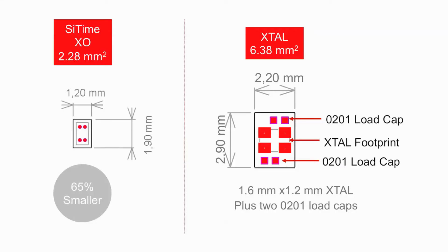Reason number three: MEMS low-frequency oscillator solutions consume 65% less space on the board. SciTime's 1.5 mm × 0.8 mm oscillators are a completely integrated solution and do not require external components such as power supply decoupling caps. The 1508 footprint is smaller than the smallest quartz crystal footprint at 1.6 mm × 1.2 mm, and when taking into account the load capacitors needed for the 32 kHz quartz crystal, the total board area for the crystal solution is almost three times larger.